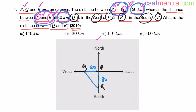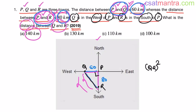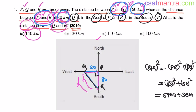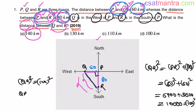Now we want the distance between Q and R. This is not 140 kilometers — distance means the shortest possible path. This is a right-angle triangle, and QR is the hypotenuse. So QR² = PR² + PQ² = 80² + 60² = 6400 + 3600 = 10,000 = 100². Therefore QR² equals 100², so QR equals 100 kilometers.